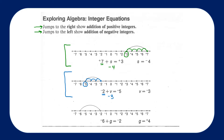Negative 2 plus negative 3 is negative 5. Take a look at our third number line. We're going to start at the integer negative 6. We're going to add a positive 4, which means we're going to leap forward in the positive direction to the right 1, 2, 3, 4 spaces, and we will land at the integer negative 2.